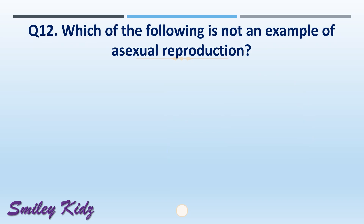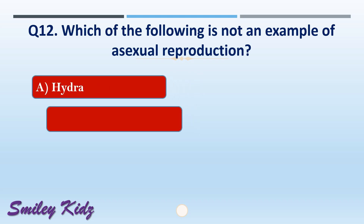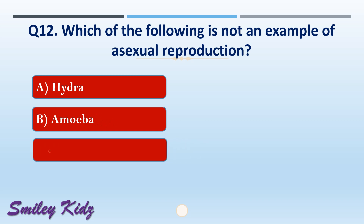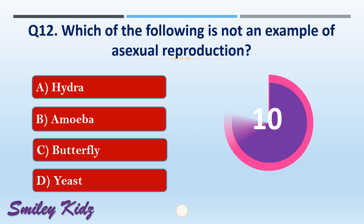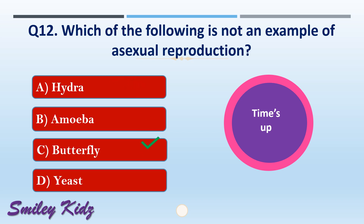Question number twelve: which of the following is not an example of asexual reproduction? The options are: A) hydra, B) amoeba, C) butterfly, or D) yeast. The right answer is option C, butterfly. Butterfly is not an example of asexual reproduction.